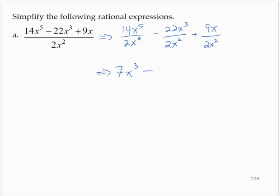22 over 2 is 11. x to the third divided by x to the second, that would be x to the 3 minus 2 is 1. So I would just leave it as 11x.